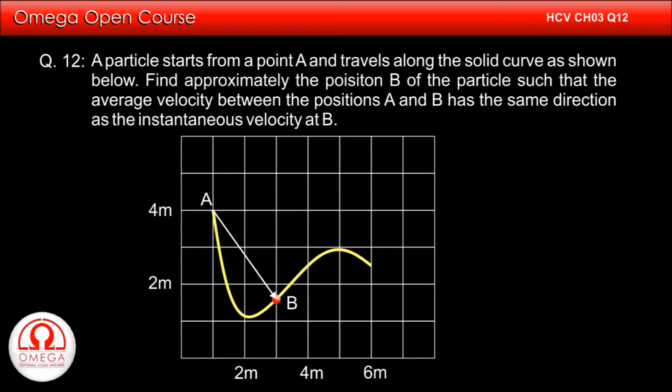So, the direction of the average velocity between two points on a curve is same as the direction of the chord joining those two points.